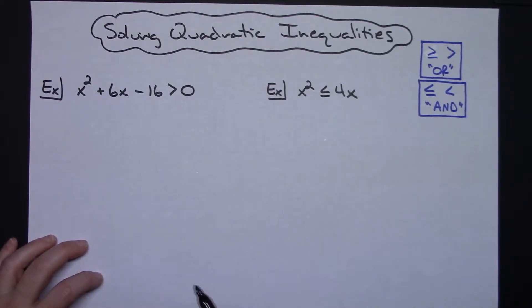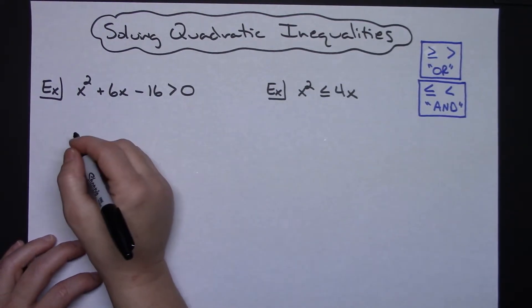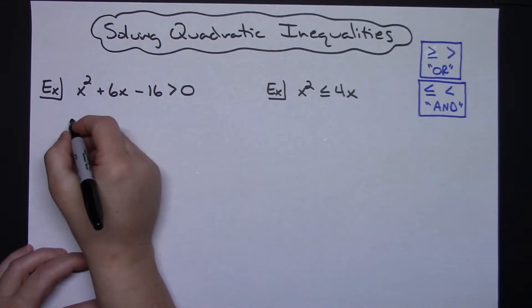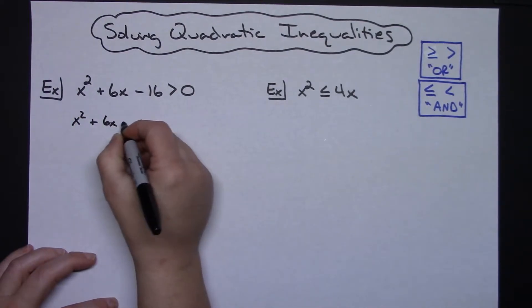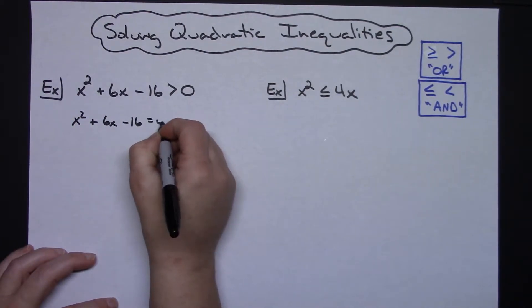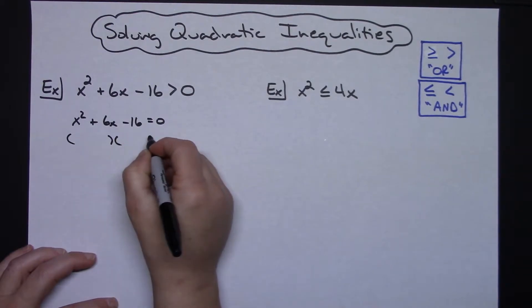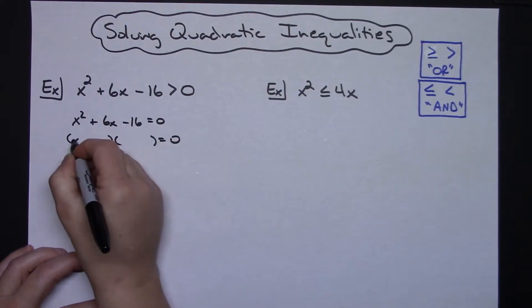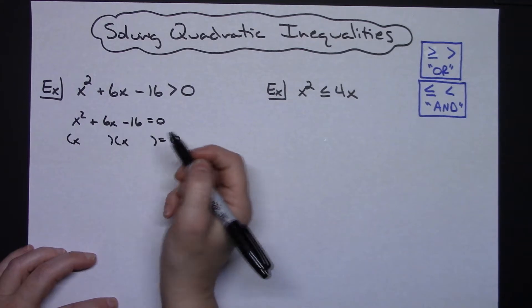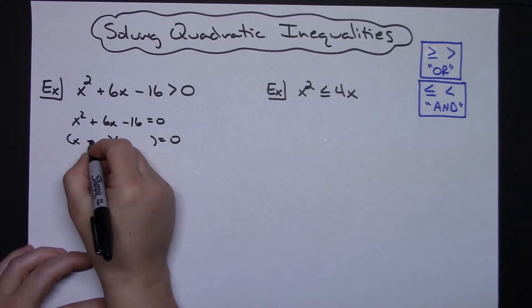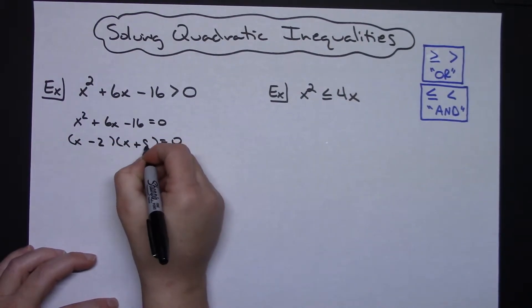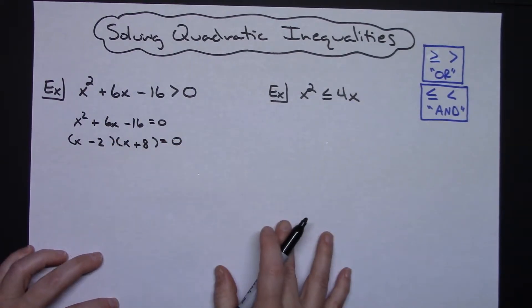The first thing algebraically I'm going to do is I'm going to look at this and I'm going to attempt to factor it because that's probably going to be the easiest way. So I'm just going to set it equal to zero: x² + 6x - 16 = 0. I can put an x and an x here, and with a negative 16 and a positive 6, it looks like we're going to be able to do a minus 2 and a plus 8.